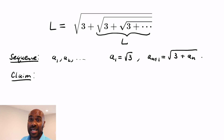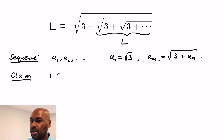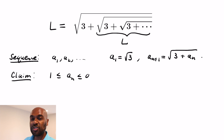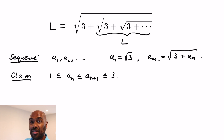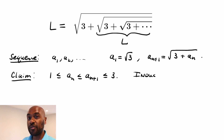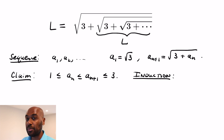We'll claim that for any n, 1 ≤ a_n ≤ a_{n+1} ≤ 3. So the sequence is weakly increasing and bounded above by 3. We'll prove this using induction. For the base case n=1, we want to show 1 ≤ √3 ≤ √(3 + √3) ≤ 3.